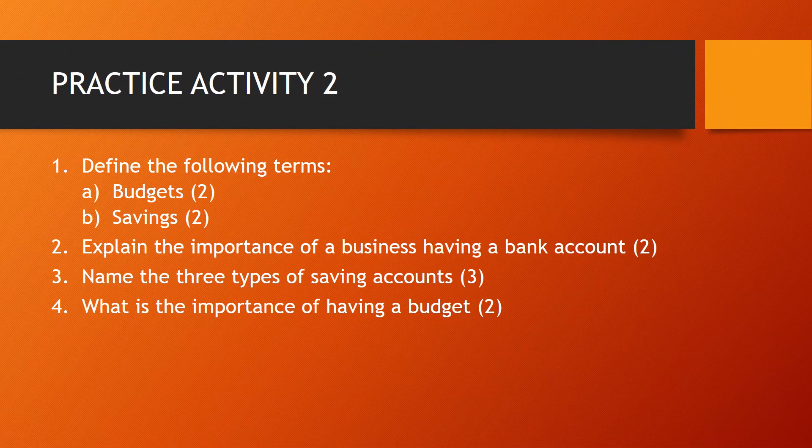Practice Activity 2.1 — define the following terms: A) Budget, B) Savings. Number two — explain the importance of a business having a bank account. Number three — name the three types of saving accounts. Number four — what is the importance of having a budget?